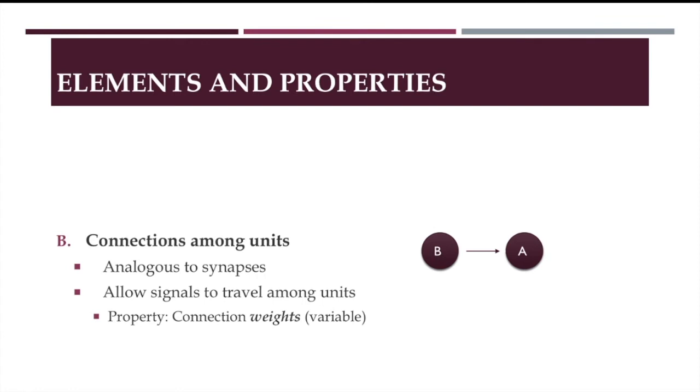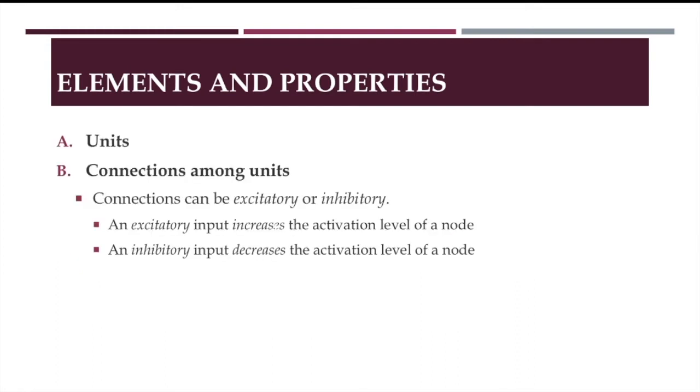The other important components are the connections among units, which are analogous to synapses and allow signals to travel across the different units comprising the network. Their central property is that they can be stronger or weaker, and so they are assigned a weight, which is a number that can vary from one moment to the other. Just like in biological synapses, some connections are excitatory, in case they increase the activation of the receiving node, or they can be inhibitory if they tend to reduce it.